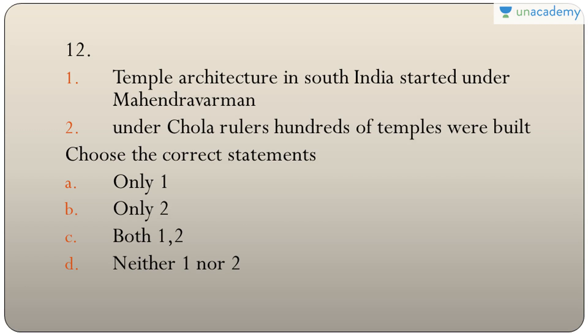Question twelve: temple architecture in South India started under Mahendra Varman, a Pallava king, and under Chola rulers hundreds of temples were built — for example, the Brihadishvara temple at Gangaikonda Cholapuram and Tanjore. Both statements are true, so the answer is C — both one and two.